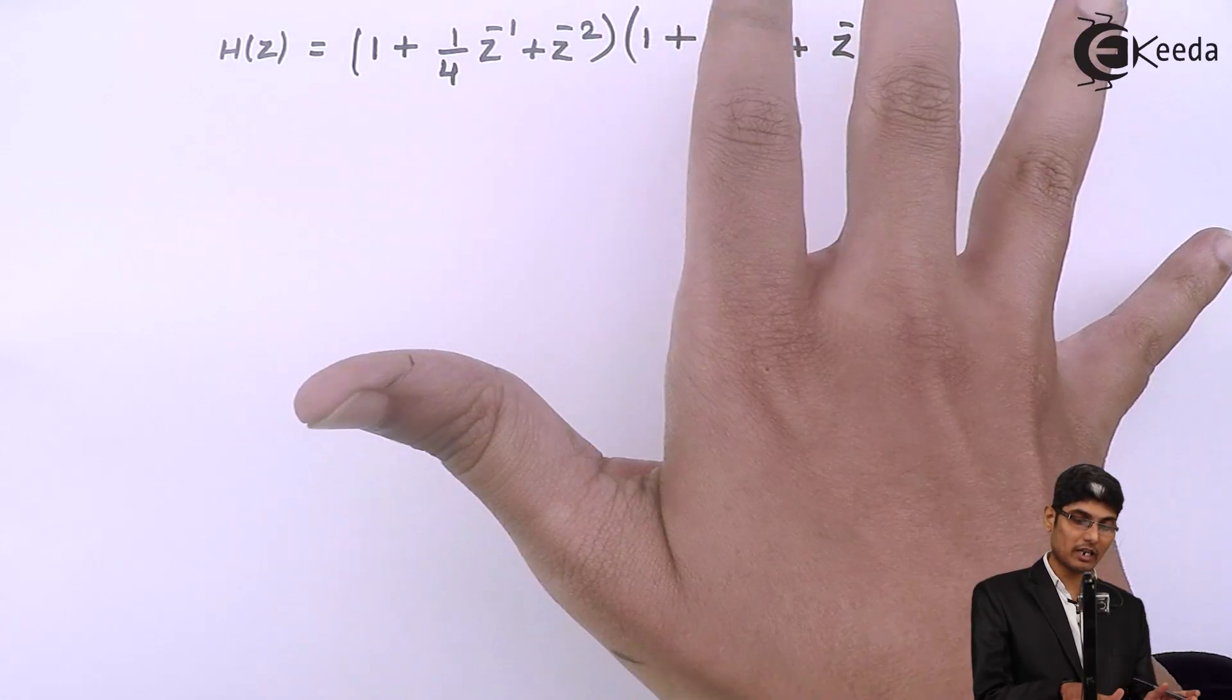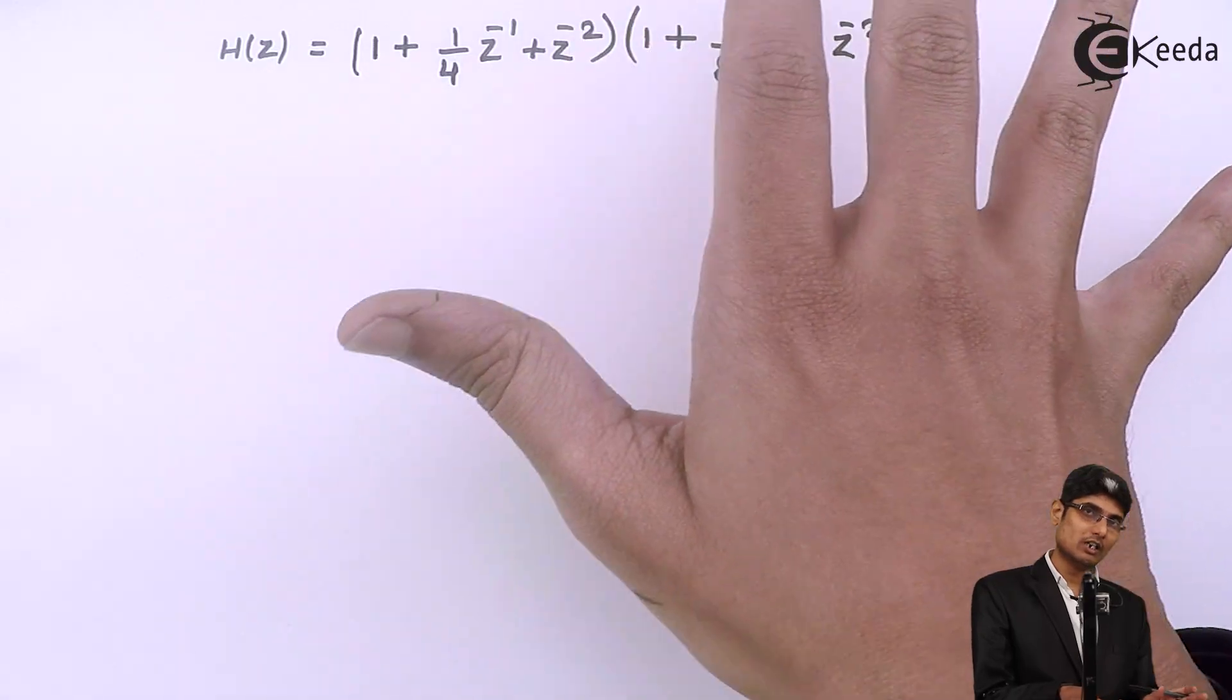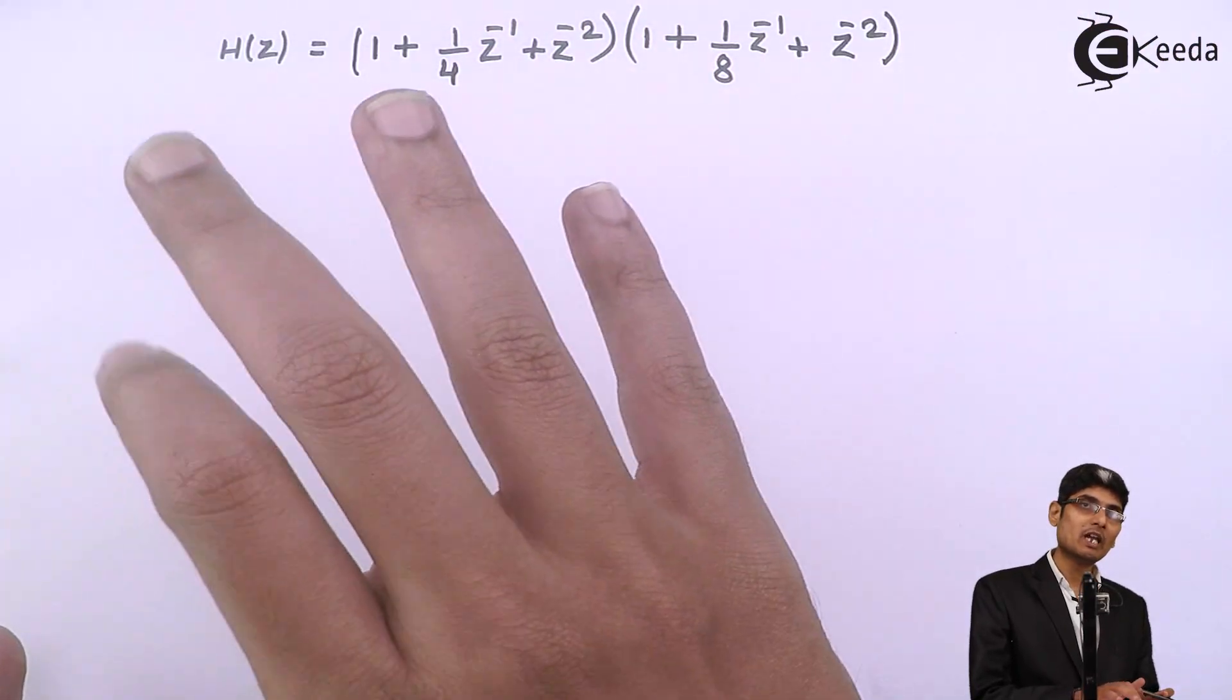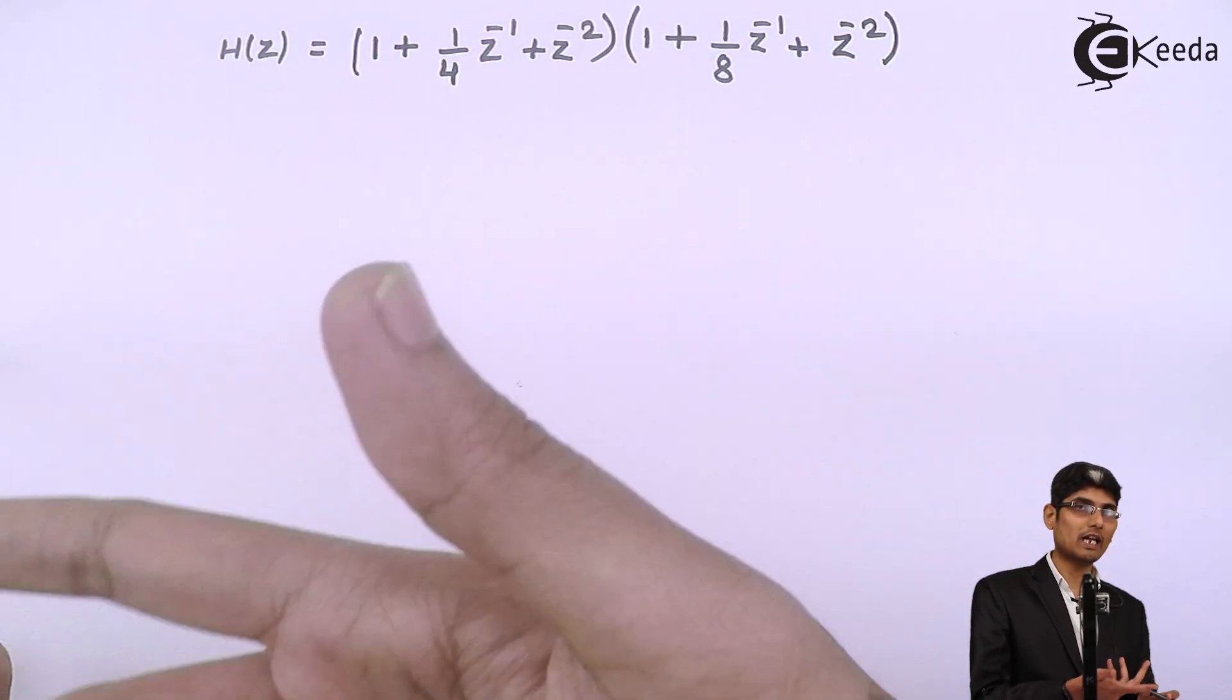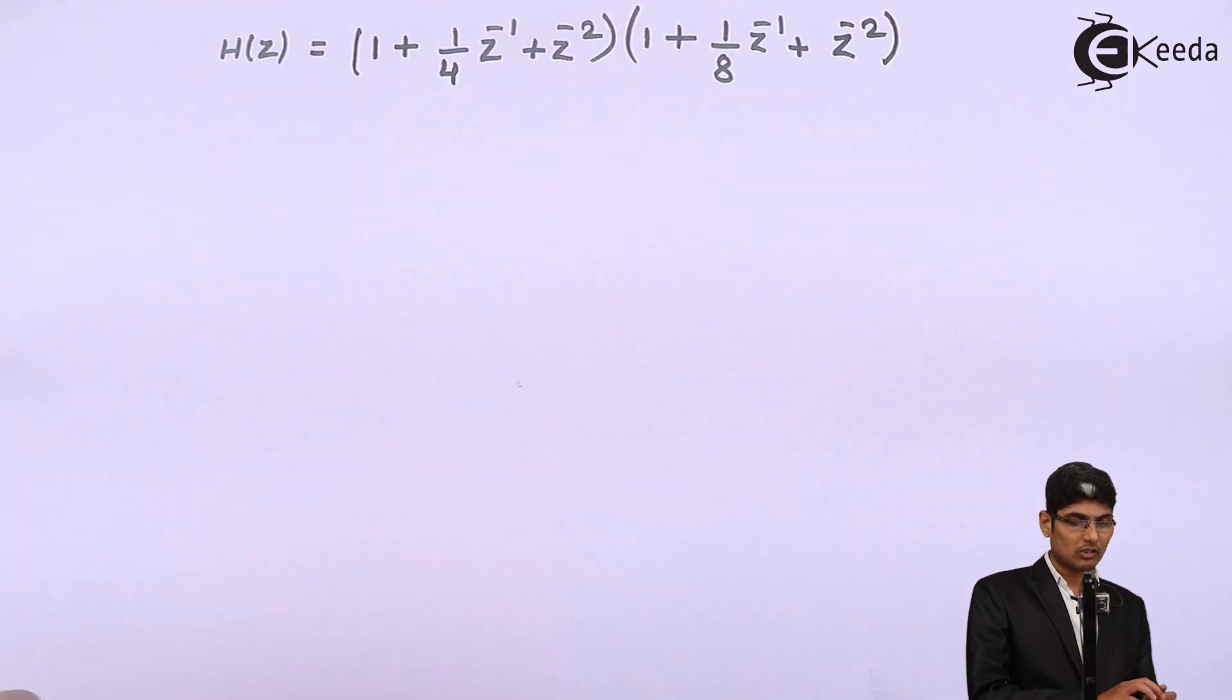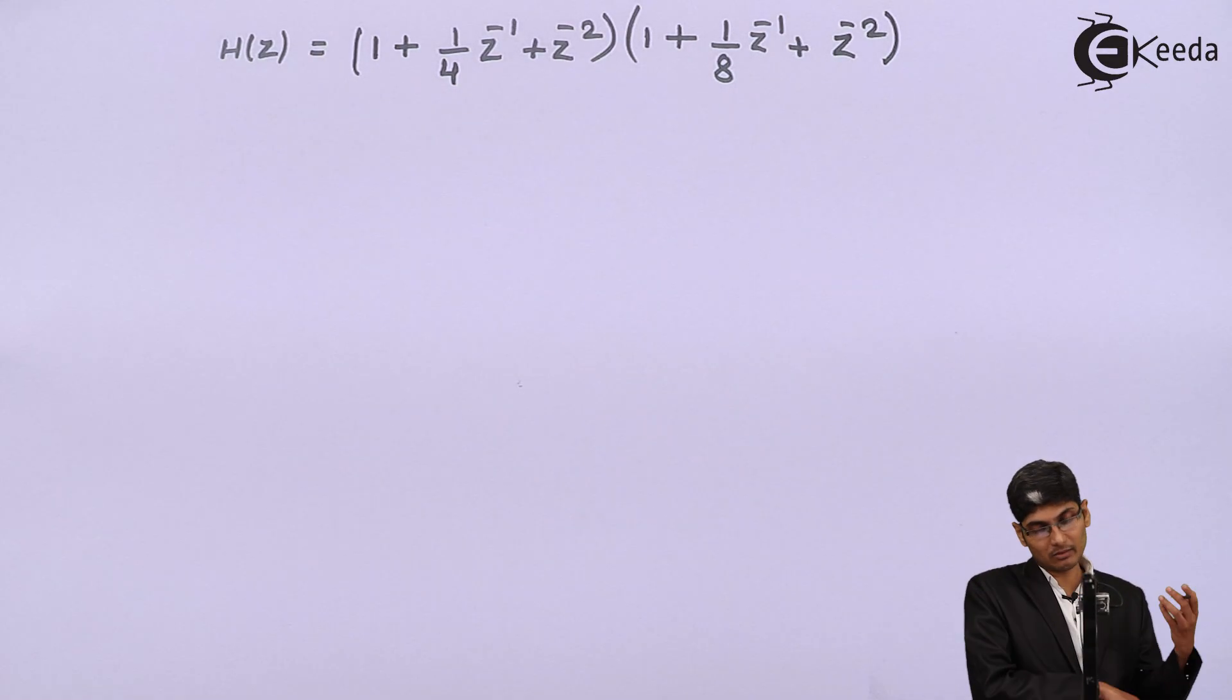Once you multiply you will get n number of terms, then you will combine all the similar terms and add up the coefficients to get four terms at the end. It is a tedious task. Rather, we will be using cascade realization because that makes the problem simpler.